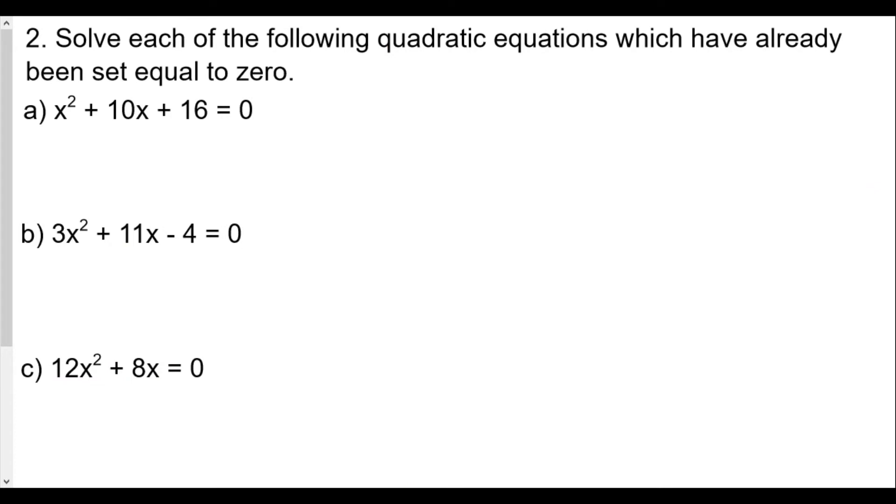Number 2. Solve each of the following quadratic equations which have already been set equal to zero. So we're going to factor. In this situation, we're trying to find two numbers that multiply to 16 and add to 10. Two numbers that multiply 16 and add to 10 are going to be 8 and 2.